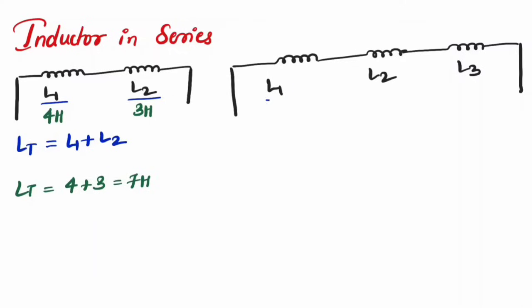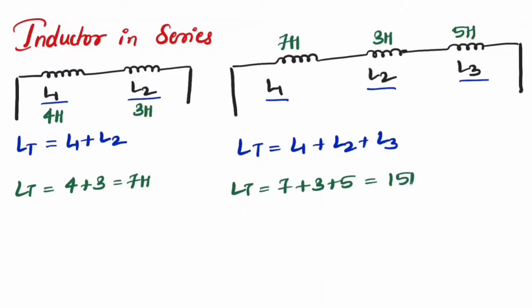And if I assume same for three inductance, the solution would be exactly same. L1 plus L2 plus L3, which is resistance in series. Let's say I have 7 Henry, 3 and 5. The total would be 7 plus 3 plus 5 would be 15 Henry. This is inductor in series.